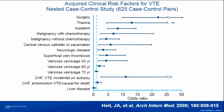Far more common are the clinical acquired risk factors for thrombophilia: patients undergoing surgery, having trauma, being hospitalized for any reason, cancer with or without chemotherapy, pregnancy. There's a whole list of acquired thrombophilias that influence initial and recurrent events. In the big picture you have to look at the patient, assess the acquired risk factors, and decide whether you're going to extend anticoagulation or not.